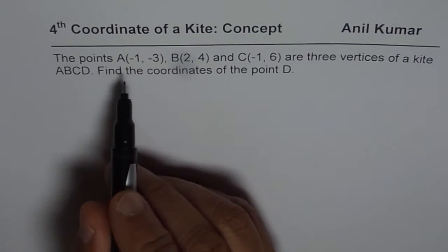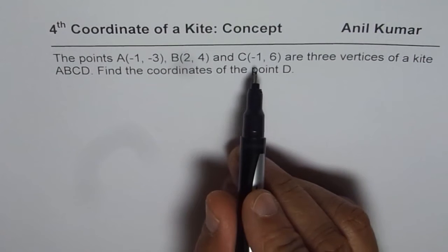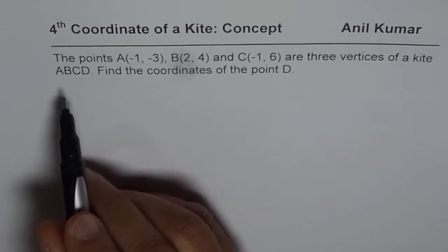The points A(-1, -3), B(2, 4), and C(-1, 6) are three vertices of a kite ABCD. Find the coordinates of the point D.